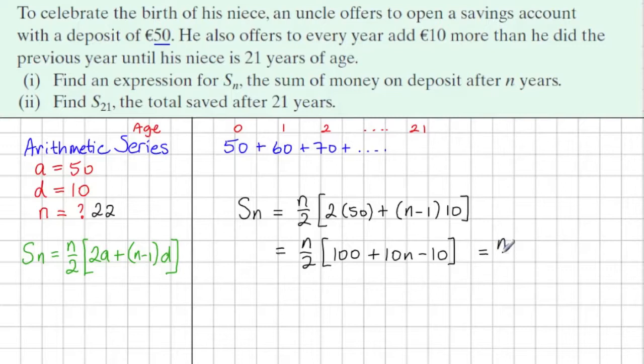And when we neaten this, we have N over 2, 90 plus 10N. Now the 2 divides into 90 and 10. So this gives us N times 45 plus 5N. And we could multiply this out, but it's okay to leave it in this factored form.